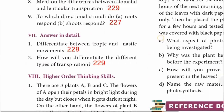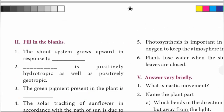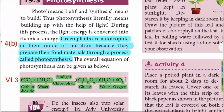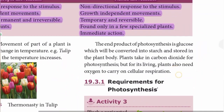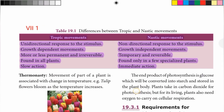Roman number seven - answer in detail. First one: differentiate between tropic and nastic movements from page 228. Tropic movements: unidirectional response to stimulus; growth dependent; more or less permanent and irreversible; found in all plants; slow action. Nastic movements: non-directional response to stimulus; growth independent; temporary and reversible; found only in a few specialized plants; immediate action.